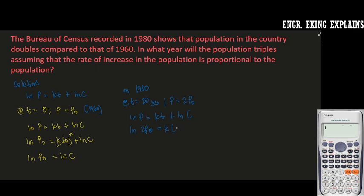we have ln P is ln 2P0. This is ln P so you have ln 2P0 minus ln P0, so we'll be ln 2P0 over P0.